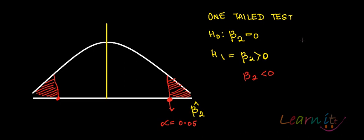So, this is a one-tailed test. I will be giving the proper examples of this. These are just the introduction to your hypothesis testing in the econometric model.